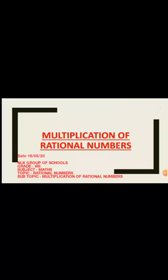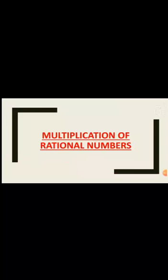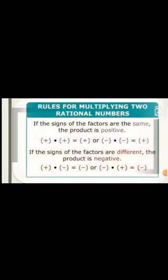Good morning class. Today we start the multiplication of rational numbers. But before starting the topic, first understand the basic rules for multiplying two rational numbers. When we multiply two numbers with the same sign we get a positive result, and when we multiply two numbers with different signs we get a negative result.